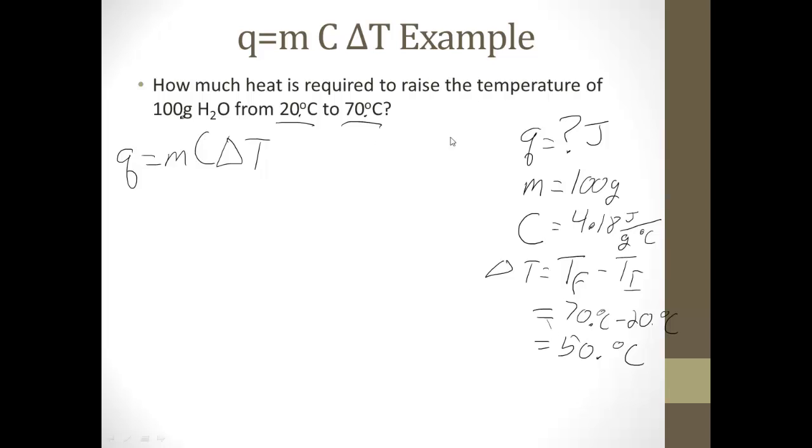So we're solving for Q, so we don't need to do any algebra here. I promise you'll be doing that in class tomorrow. But here we don't. Mass is 100 grams, C is 4.18 joules, and I'm going to put it over grams degrees Celsius, you'll see why in a moment, times our delta T which is 50 degrees Celsius. As always, our next step, cancel out units. So get rid of grams, get rid of degrees Celsius, and we're left with only joules, which works, because Q is heat energy and it's measured in joules, just like we wrote here.